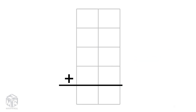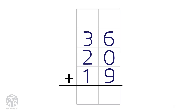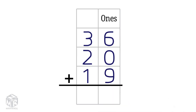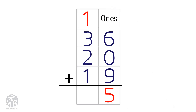Let's try another example: 36 plus 20 plus 19. We can't make a 10 using the ones, so we add from top to bottom. 6 plus 0 plus 9 equals 15. We put the 5 in the ones column and the 1 in the tens column.